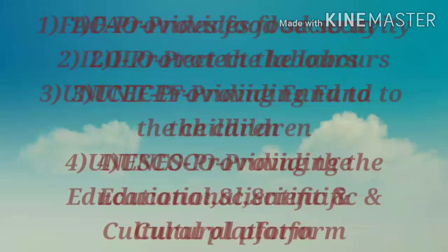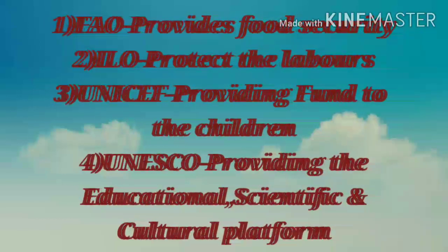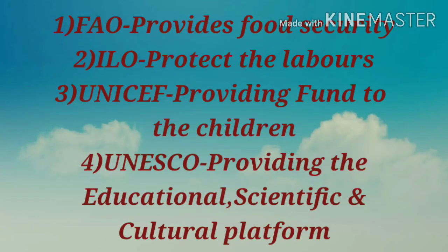The UN agencies include, first, the FAO — Food and Agricultural Organization — which provides food security to the citizens of the world. The second is the ILO — International Labour Organization — which protects the rights of laborers in the world regarding labor and the minimum wages they should receive when working at any place.